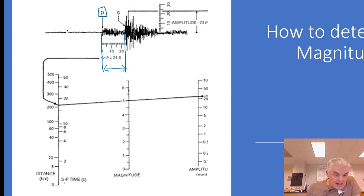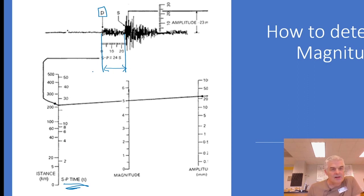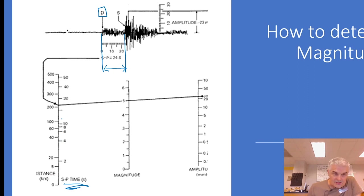We put it on the SP time graph and find out how long it took to get there. The SP time also gives you a distance. Two seconds, four seconds, six seconds — in this particular example, it was about ten seconds, meaning the earthquake was about 200 kilometers away.